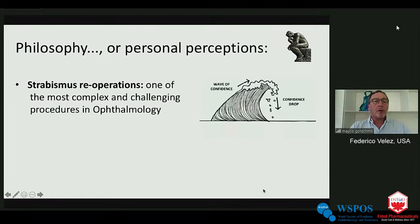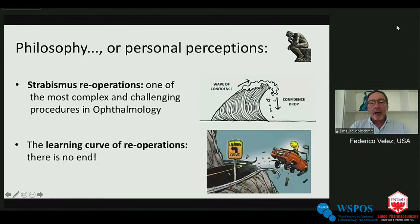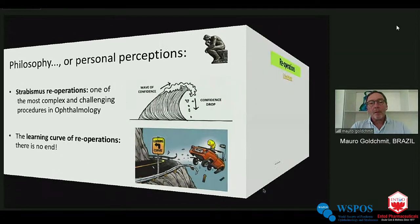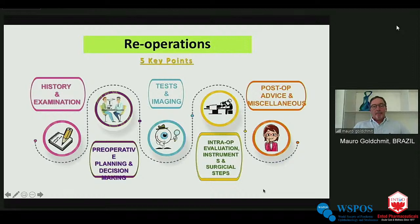Strabismus re-operation for me is one of the most complex and challenging procedures in ophthalmology. When we start teaching strabismus surgery, there's a wave of confidence that residents and fellows experience — but when they come to re-operations, there is a never-ending learning curve. We'll cover five key points: history and examination; pre-operative planning and decision making; important tests and imaging; intra-operative evaluation, specific instrumentation, and surgical steps; and finally post-operative advice and miscellaneous aspects.